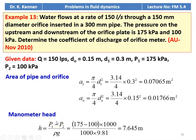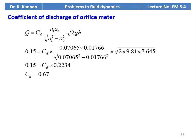The manometric head: H = (P1 − P2) / ρG = (175 − 100) × 1000 ÷ (1000 × 9.81) = 7.645 meters. From the orifice meter discharge equation: Q = CD × (A1 × A₀) ÷ √(A1² − A₀²) × √(2GH). Substituting 0.15 = CD × (0.07065 × 0.01766) ÷ √(0.07065² − 0.01766²) × √(2 × 9.81 × 7.645); calculating the right-hand side gives 0.2234. Therefore CD equals 0.67.